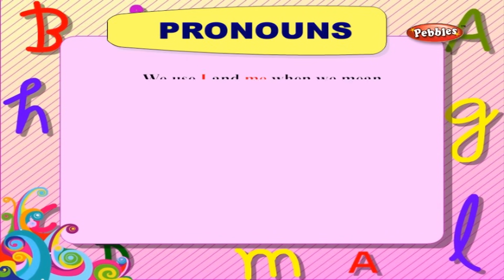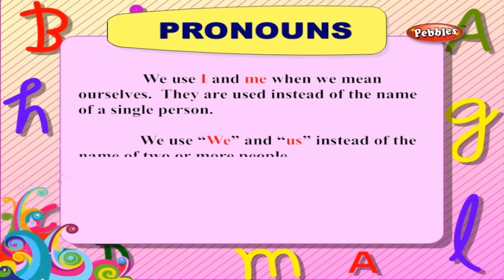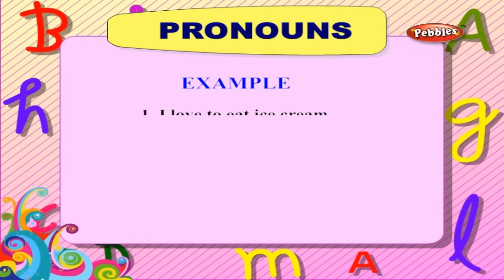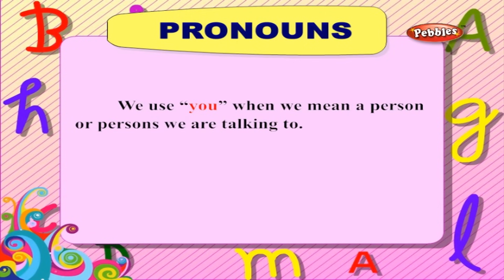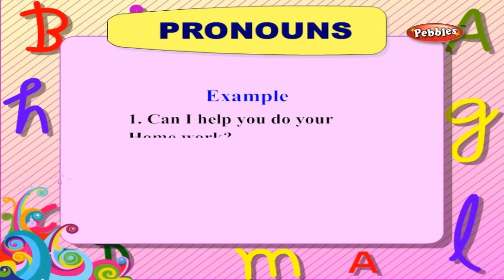Pronouns: we use 'I' and 'me' when we mean ourselves; they are used instead of the name of a single person. We use 'we' and 'us' instead of the name of two or more people. 'I', 'me', 'we', and 'us' are pronouns of the first person. Example: 'I love to eat ice cream. Will you buy me one?' 'We love to eat ice cream. Will you buy us some?' We use 'you' when we mean a person or persons we are talking to — 'you' is the pronoun of the second person. Example: 'Can I help you do your homework?' 'I know you are an obedient student.'